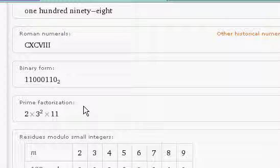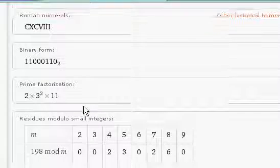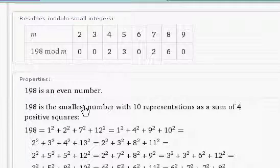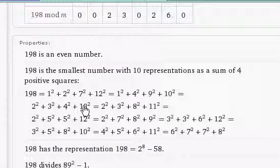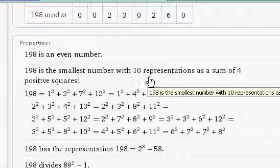198 is an even number. And, oh, look at that. 198 is the smallest number with 10 representations as a sum of 4 positive squares. So, here are all of the 10 representations. Curious.